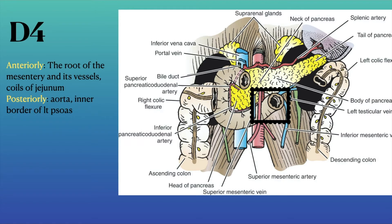The fourth part of the duodenum is related anteriorly to the root of the mesentery and its vessels and the coils of jejunum, and posteriorly to the aorta and inner border of the left psoas.